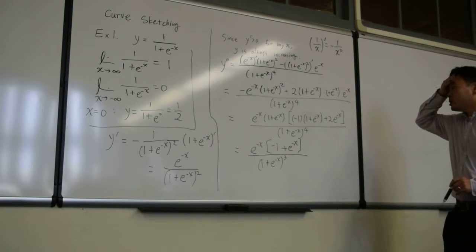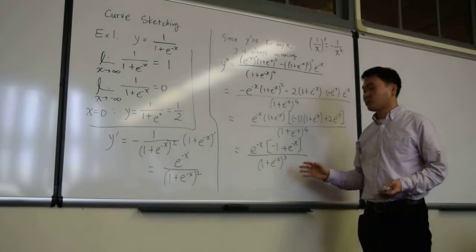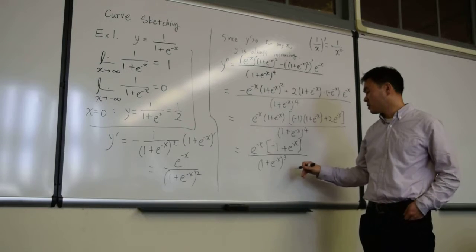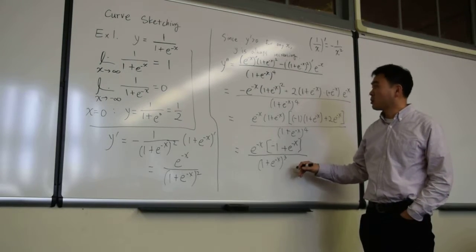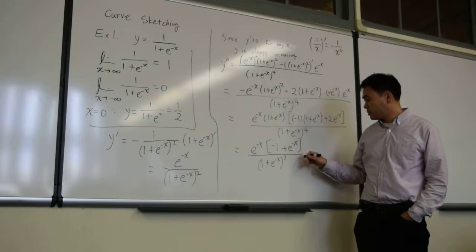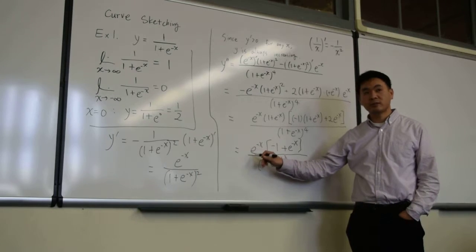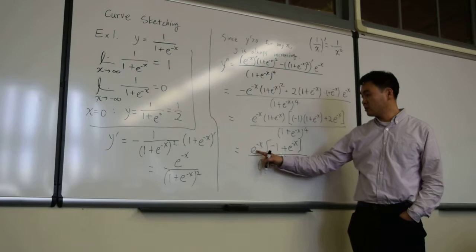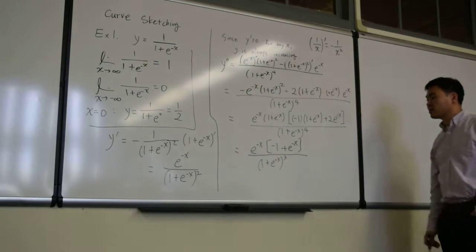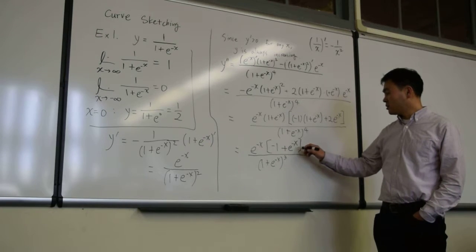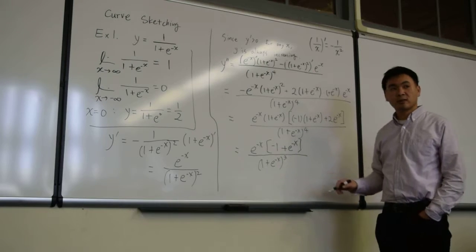We don't care about the exact value of the second derivative — all we care about is whether it's positive or negative, because we want to know whether the function is concave up or concave down. The denominator is always positive and e to the negative x is always positive, so the only thing that can change the sign is the factor (negative 1 plus e to the negative x).